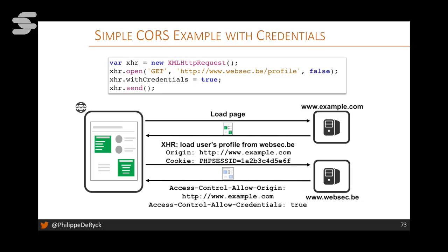For a credentialed call, you must explicitly set 'withCredentials' so the browser includes the cookie. The browser also looks for the server to acknowledge the credentialed call with 'Access-Control-Allow-Credentials: true' and an explicit origin — the star is no longer valid with credentials. Only then will the call succeed and give you access to the response. This requires cooperation and standards compliance — a malicious browser breaks all bets anyway. You can also start Chrome without the same-origin policy, which is not recommended but exists for testing purposes.